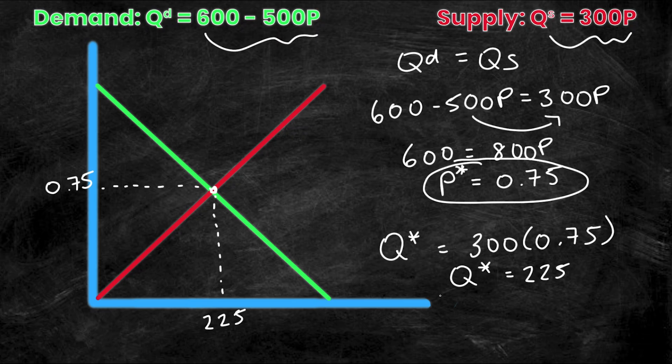And so now I have my labeled graph. Don't forget, of course, to label your axes. So Q and P. Now I've got my labeled equilibrium, which is a price of 0.75 and a quantity of 225. But now we're going to look at two scenarios, a shortage and a surplus. And we're going to take a look at what that means for the supply and demand graph.